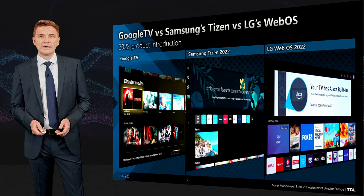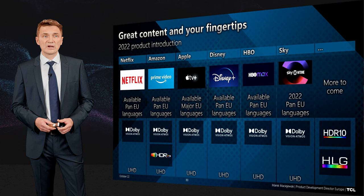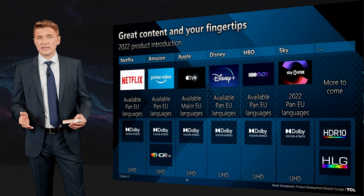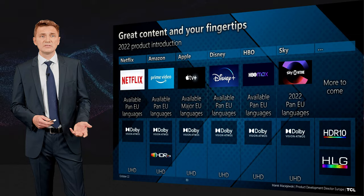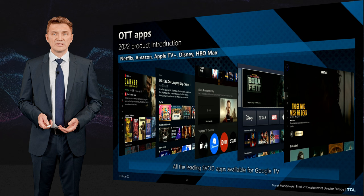Great content is available on these platforms and drives the demand for performance-focused TVs. Netflix, Prime, Apple TV Plus, Disney Plus, HBO Max, Sky, and Showtime all use Dolby Vision and Dolby Atmos as standard formats to deliver content. All these apps are available in Android and Google TV, focused on user experience and the ability to recommend content.